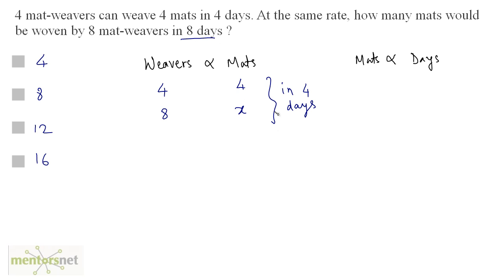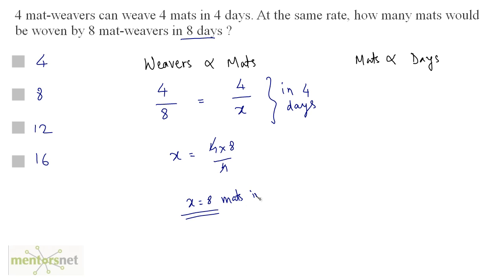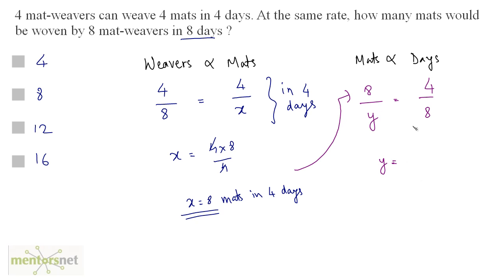Let us first calculate how many mats can be woven by 8 weavers in 4 days. Using direct proportion, we equate: X equals 4 times 8 divided by 4, so X is 8 — giving us 8 mats in 4 days. Now, how many mats in 8 days? Y equals 8 times 8 divided by 4. 8 times 2 is 16. So 16 mats in 8 days. That's our answer — Option D.